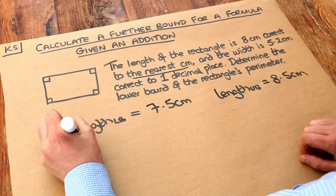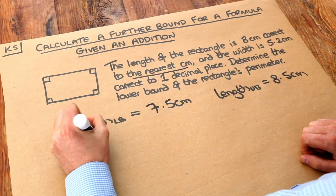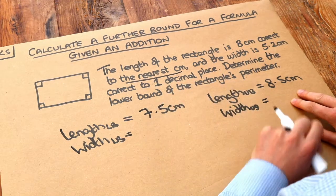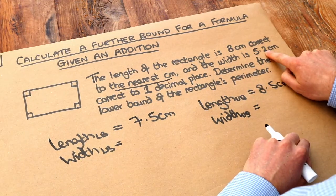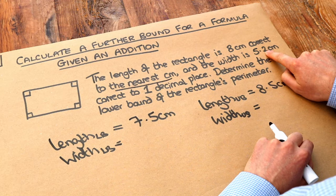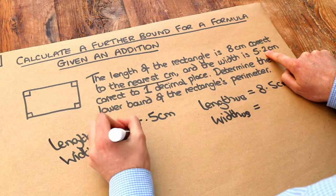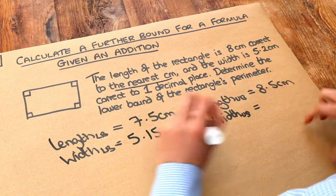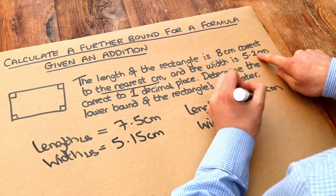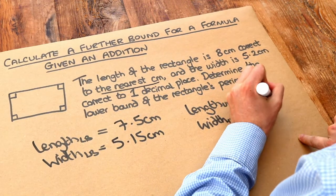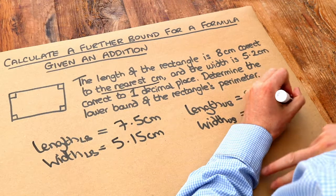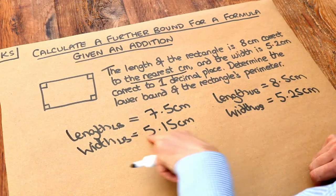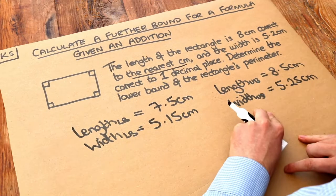Now for the width — what are the lower bound and upper bound? When a value is rounded to a certain number of decimal places, the easiest way is to reduce the last digit by 1 and put a 5 on the end, giving a lower bound of 5.15 centimetres. To get the upper bound, you just put a 5 on the end, giving 5.25 centimetres. So the width could have been anything between 5.15 and 5.25.